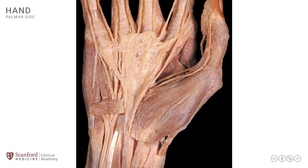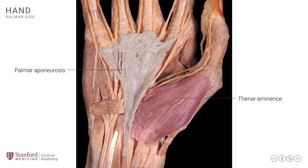Let's now look at a superficial dissection of the palm of the hand. We have removed the skin and some of the superficial connective tissue to show some of the deeper structures clearly. The first structure seen is this flat triangular structure known as the palmar aponeurosis — a connective tissue structure that sits in the middle of the palm, provides attachment for other structures, and is a location where the skin finds firm attachment to deeper structures. We see the thenar group of muscles at the base of the thumb forming the thenar eminence, and likewise the hypothenar group of muscles at the base of the little finger forming the hypothenar eminence.